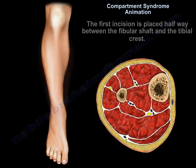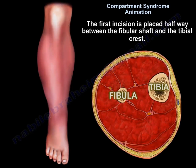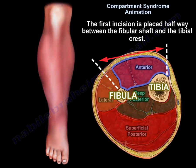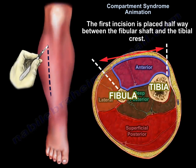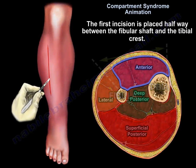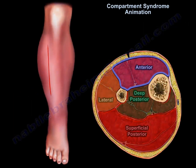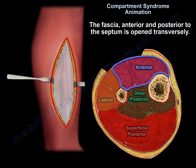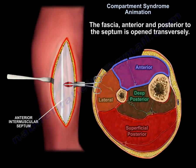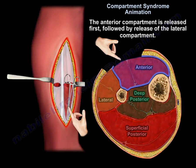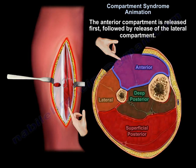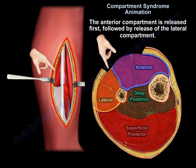The first incision is placed halfway between the femoral shaft and the tibial crest. The fascia, anterior and posterior to the septum, is opened transversely. The anterior compartment is released first, followed by release of the lateral compartment.